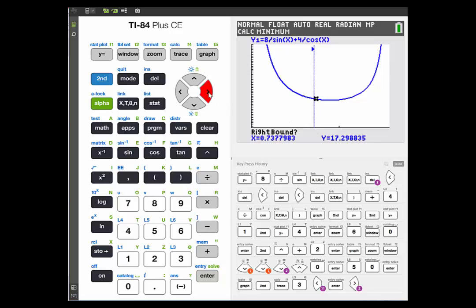Now I'm going to move the cursor to the right until I get to the other side of where I can see that it looks like we have a minimum value. So I'll just move it over here to the right a bit. And then press enter.